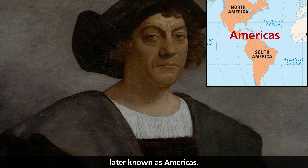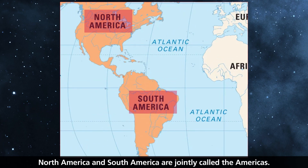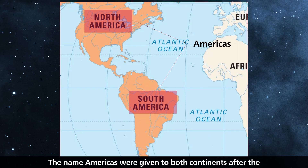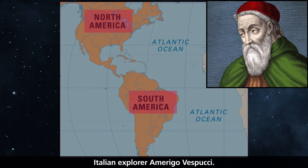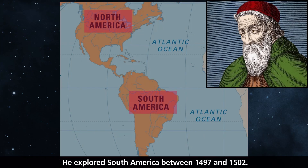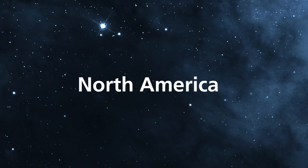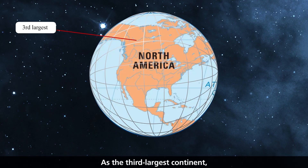His discovery of a new landmass was called the New World, later known as the Americas. North America and South America are jointly called the Americas. The name Americas was given to both continents after the Italian explorer Amerigo Vespucci, who explored South America between 1497 and 1502.